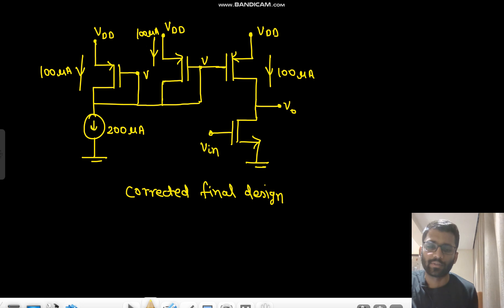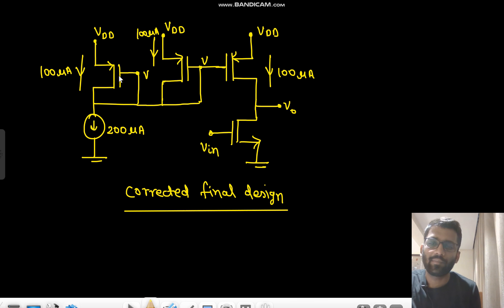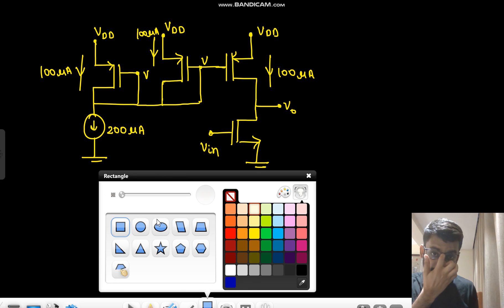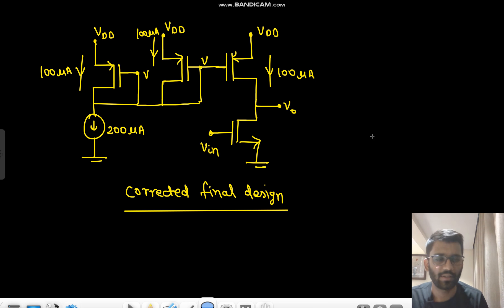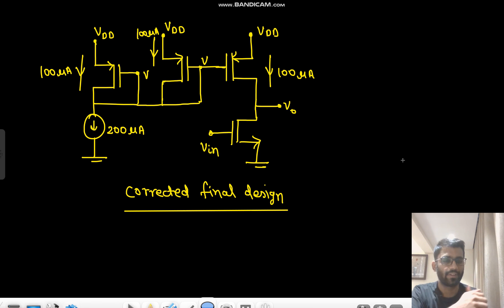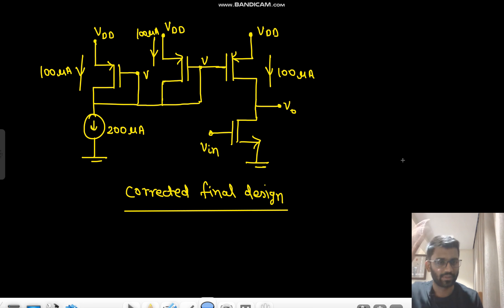I hope you've understood the concept. VSD is the same for all three transistors, so this is the final corrected design. We will see more problems on current mirrors later, but now we will move on to differential amplifiers. Thank you.